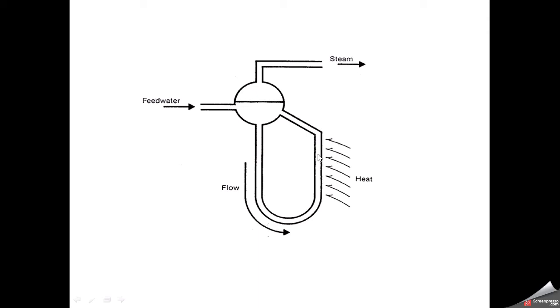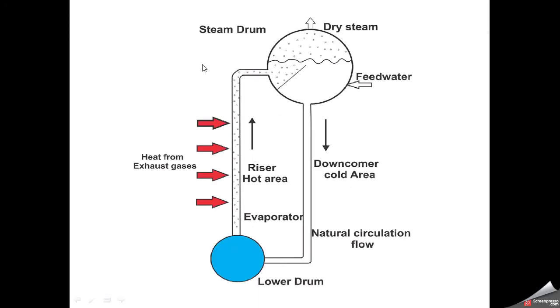There is another picture which explains this more explicitly. This is the lower drum and this is heat from exhaust gases. The water rises as this is the hot area and hot water rises up. After reaching the steam drum, dry steam separates out at the top. The feed water comes inside and the cold water is the downcomer. This water circulates in this circuit.